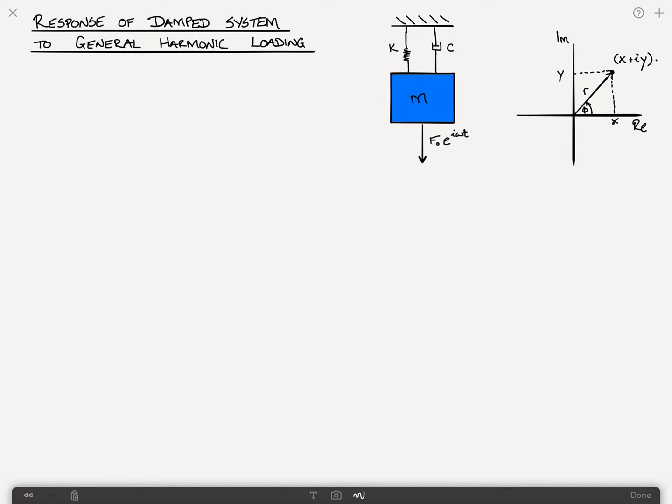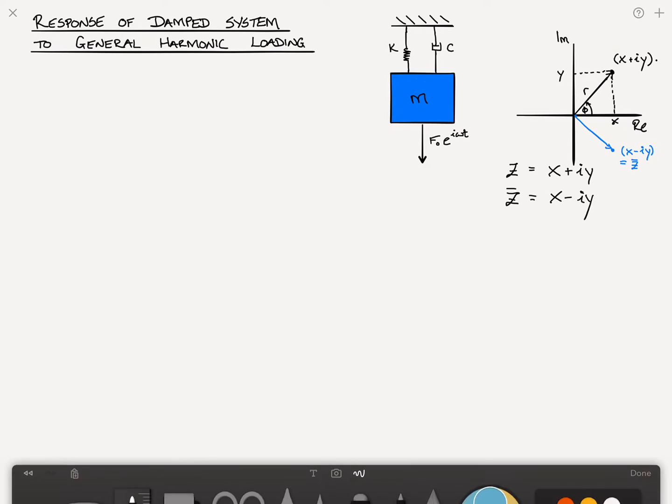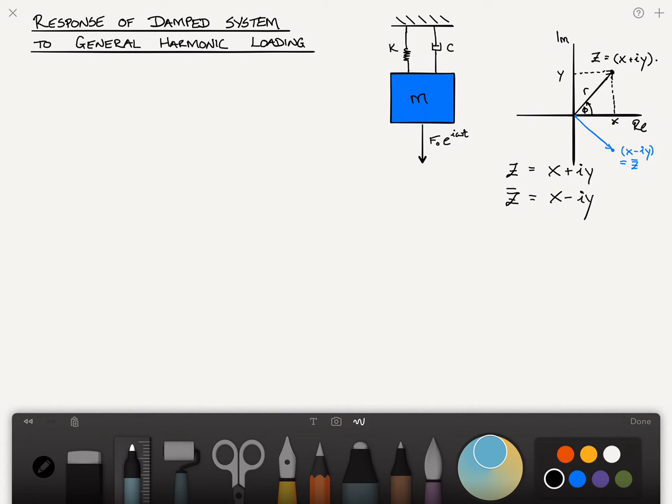A general point z, we'll call z a complex number, is equal to x plus i y. The complex conjugate of z, which is generally written z bar, would be x minus i y. The complex conjugate would just be the reflection of this point about the x axis. So this point here would be x minus i y, which is equal to the complex conjugate of z. This up top is z. This angle in this case would be minus phi.